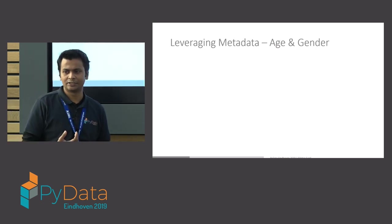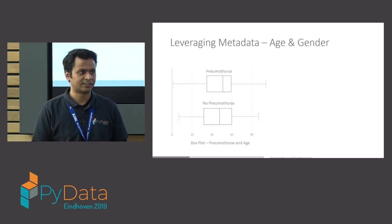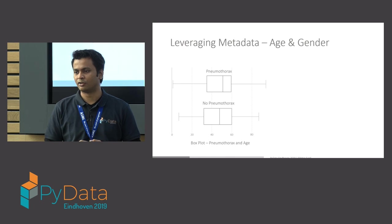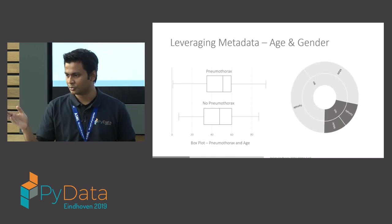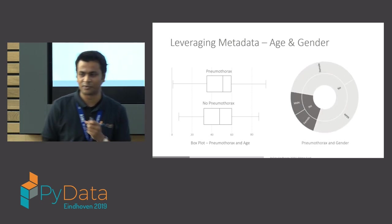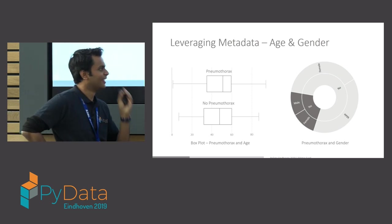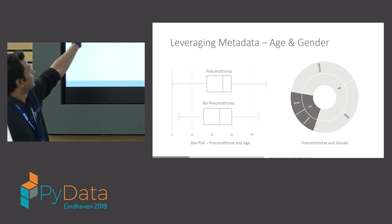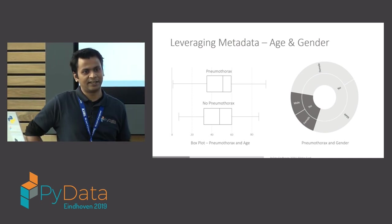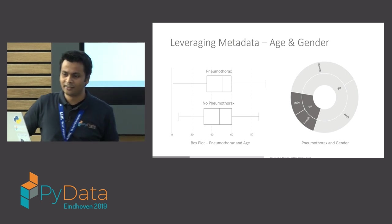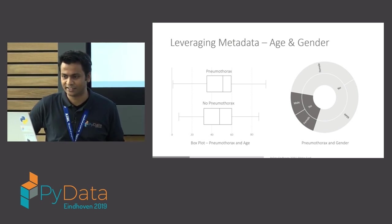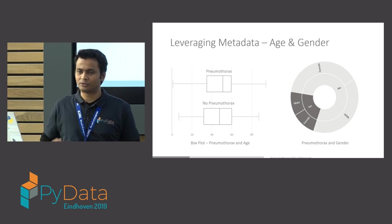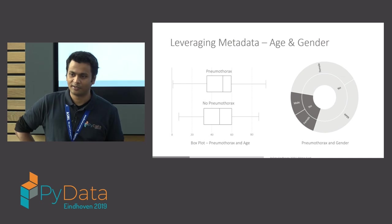Furthermore, in this case we have age and gender in the metadata. One obvious thing to do was to see if there is a difference between age and gender for the patients. There is a nice box plot and you do see that for patients with pneumothorax, the min and max values are pretty high — some hint of data leakage there. For Kaggle it's fine, but in real life leakage doesn't help. So there's not really much in terms of age and gender differences, but it's good to know that we have some metadata we can further investigate.